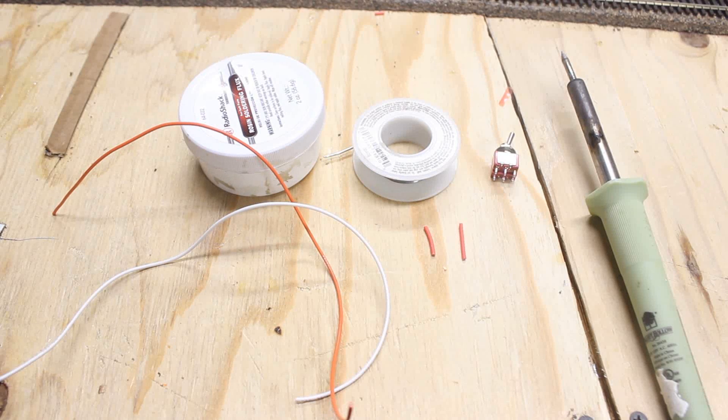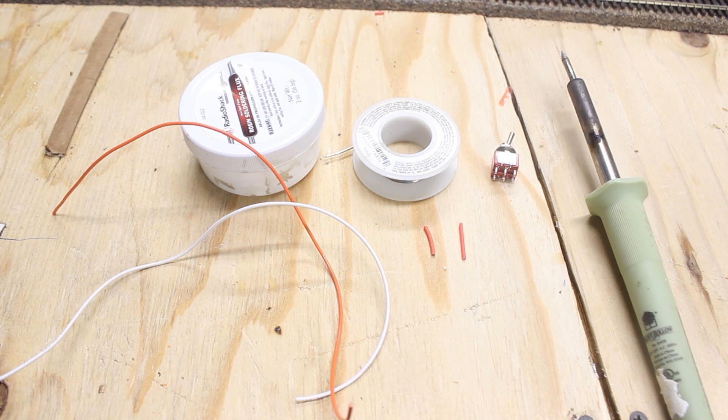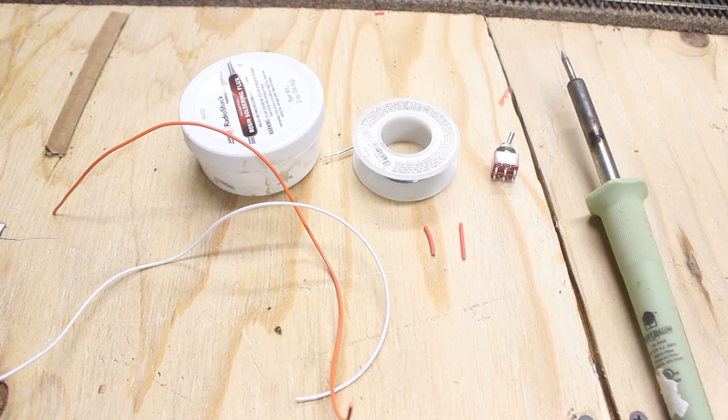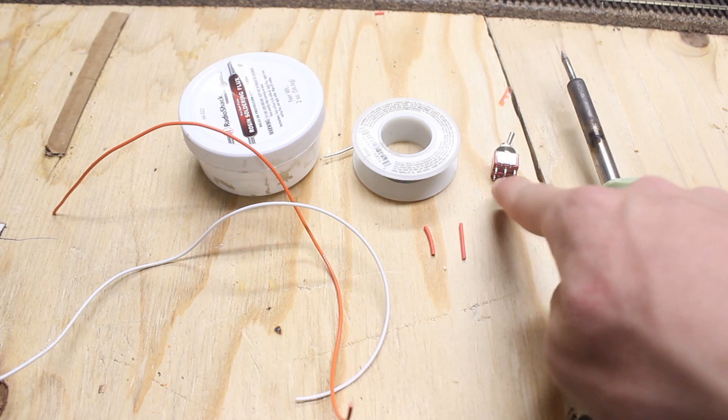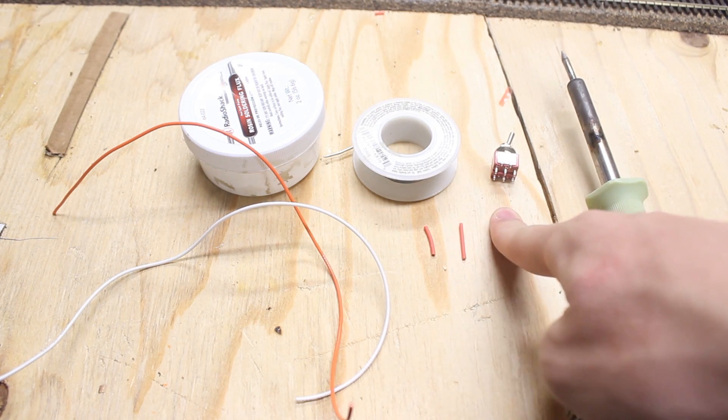Welcome to another how-to video. In this episode I'm going to start a multi-part tutorial series on how to install a tortoise switch machine. I'm also going to cover how to wire it and how to wire a toggle switch. This is going to be a multi-part video and this first part here is going to be how to wire the switch.